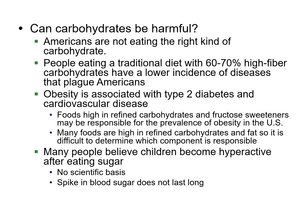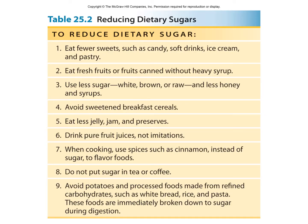An urban myth is the idea that giving children too much sugar makes them hyperactive — that's actually not true. When it comes to dietary sugar, you should avoid candy, soft drinks, ice cream, and pastries. When you do eat sugar, try to get it from natural sources like fresh fruit. Avoid canned foods with heavy syrups, jellies, jams, and processed foods like white bread or white pasta — those aren't good for you.